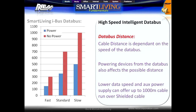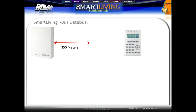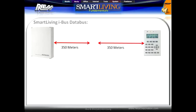Data bus distance is dependent on both speed and how many devices are being powered from the system. To increase data bus distance, simply decrease the speed of the data bus or power devices from an auxiliary power supply. In cases where we need to increase the data bus distance further, we can install a data bus isolator, which will increase distance, isolate both sides of the data bus, and regenerate and boost power for long cable distances.